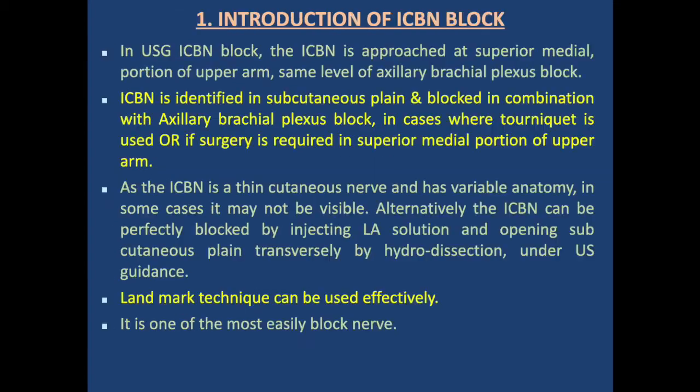Introduction: in this technique the intercostal brachial nerve is approached at the superior medial portion of the upper arm, almost at the same level as the axillary brachial plexus block. The intercostal brachial nerve block is identified in the subcutaneous plane and is blocked in combination with axillary brachial block in cases where a tourniquet is required or if surgery is required in the superior medial portion of the upper arm.